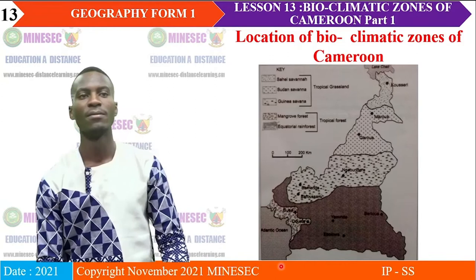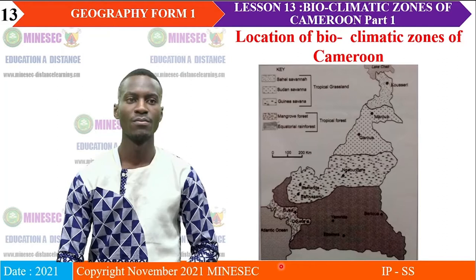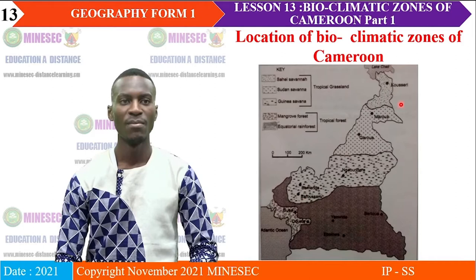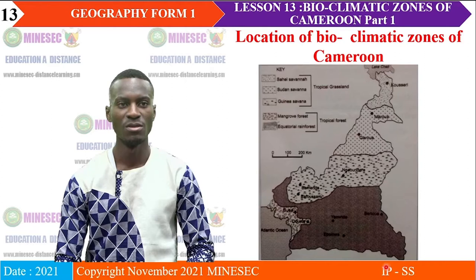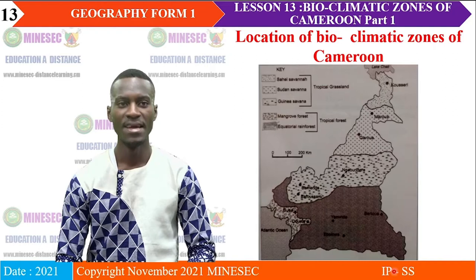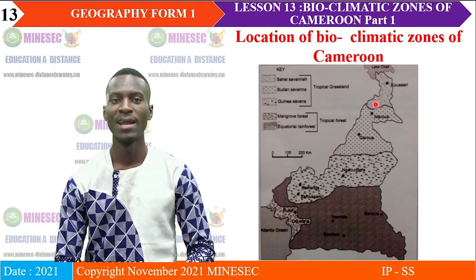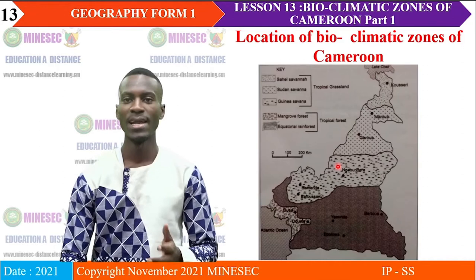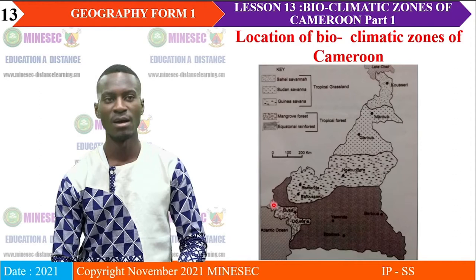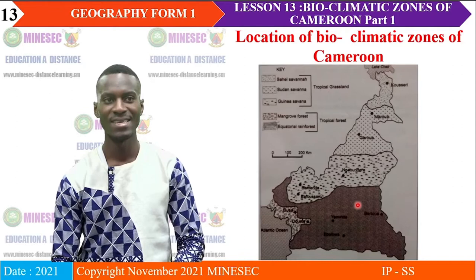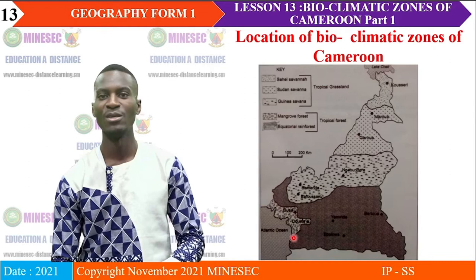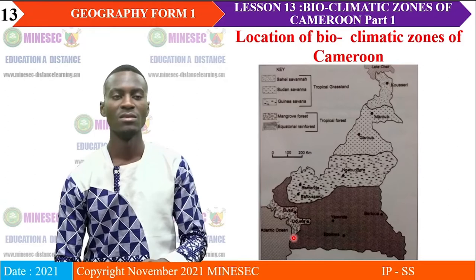We have a map showing the location of the bioclimatic zones of Cameroon. You have the map of Cameroon. This part which is down south is the equatorial bioclimatic zone. This part which is up is the tropical bioclimatic zone. You realize that the equatorial bioclimatic zone, which is in the south, is again divided into two — the darker part, and this other part around the coast of Cameroon. We are going to see those different bioclimatic zones one after the other.